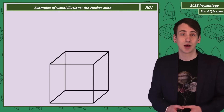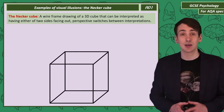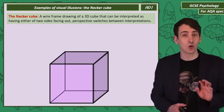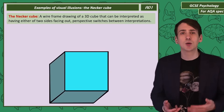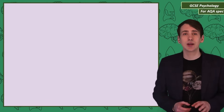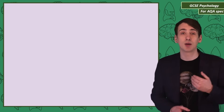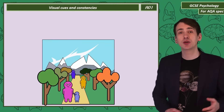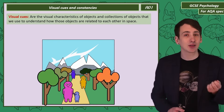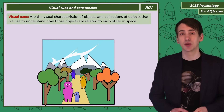Finally, the Necker Cube. This is the drawing of the outline of a cube. You should be able to see it in two ways — as having the bottom square facing out or the top square facing out — and your brain can switch between both perspectives. To explain how these visual illusions work, we need to think about how the mind makes sense of the information received by the visual system. Visual cues are the tricks the brain uses to understand from limited information how objects are related to each other in three-dimensional space.